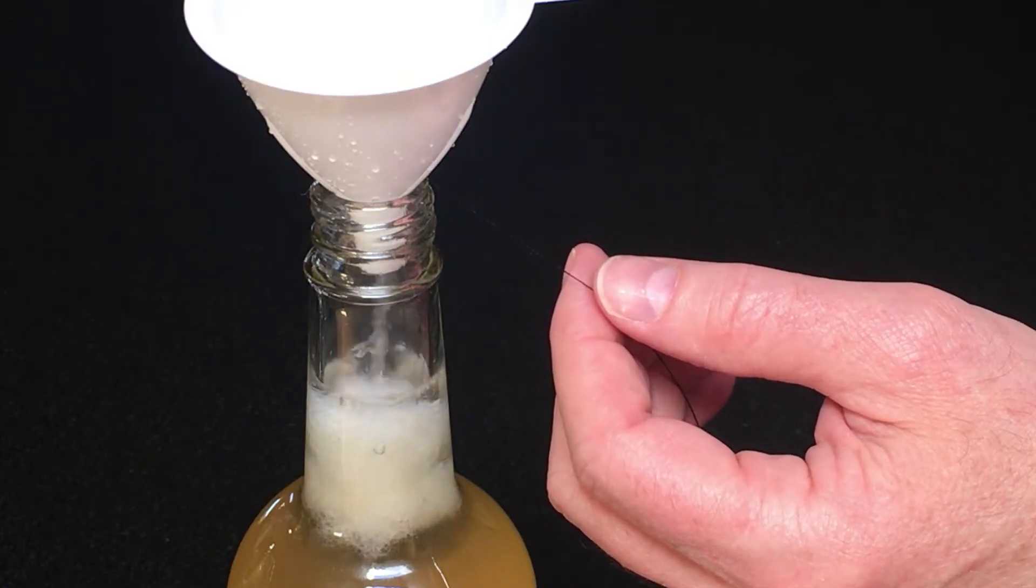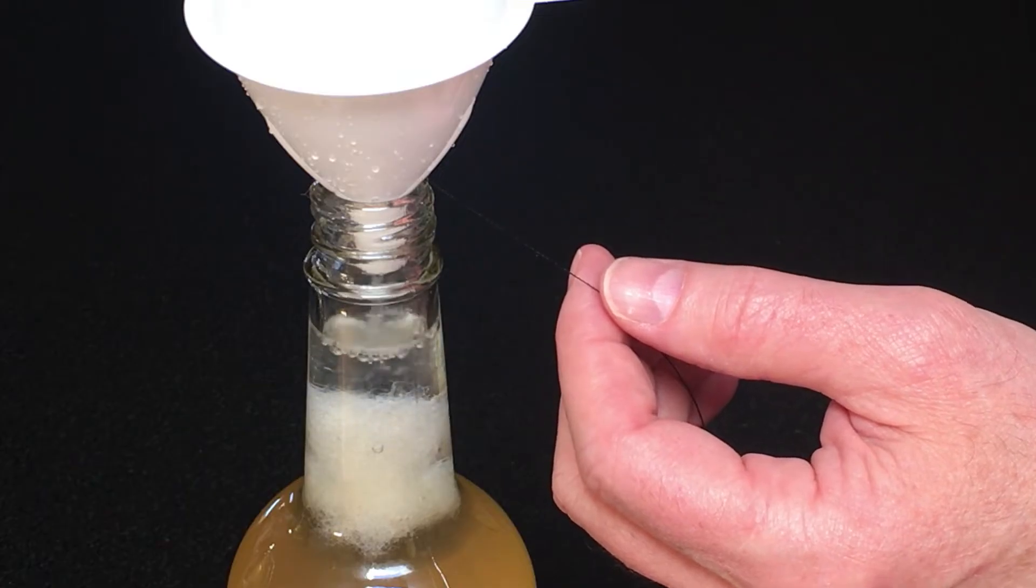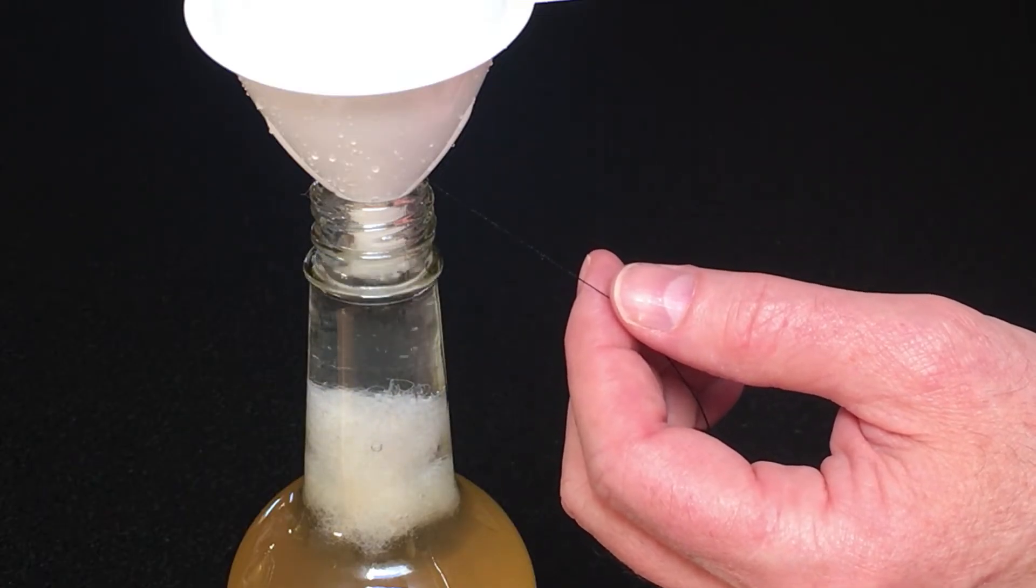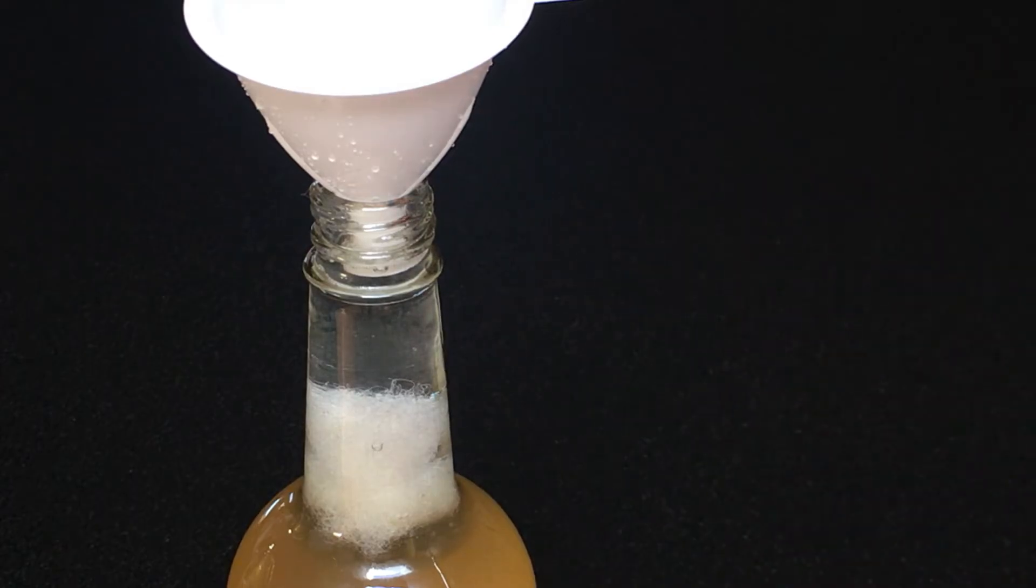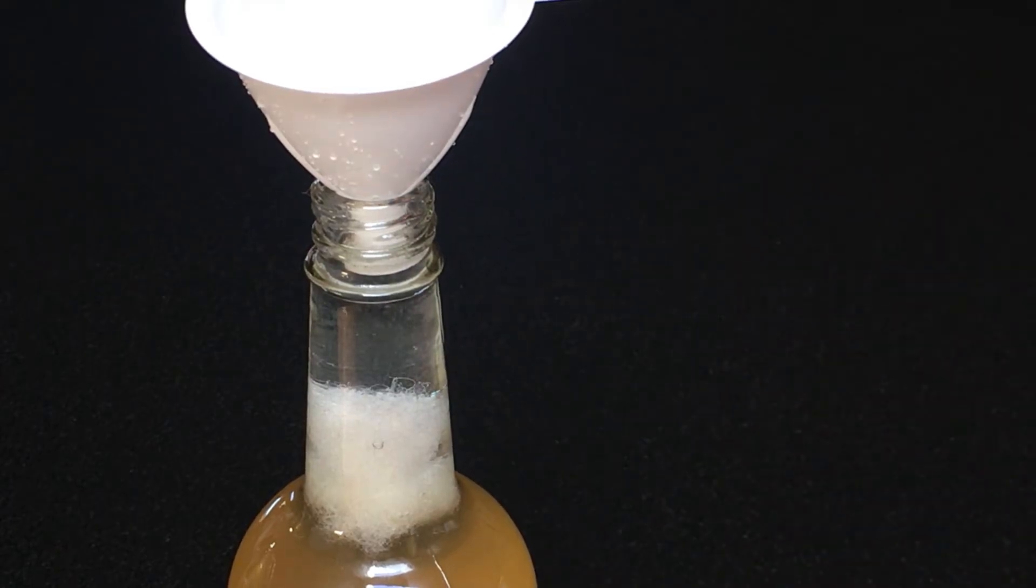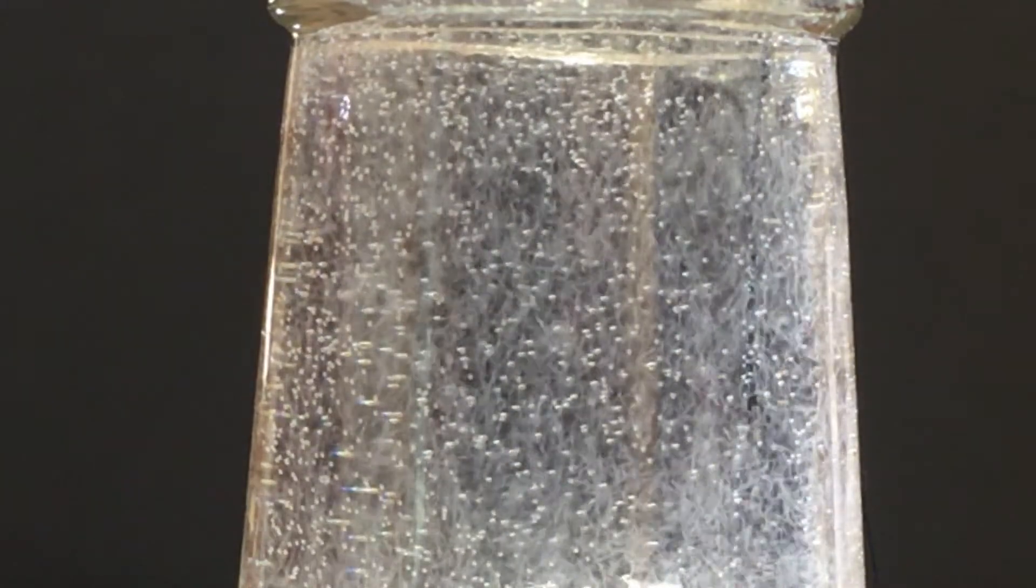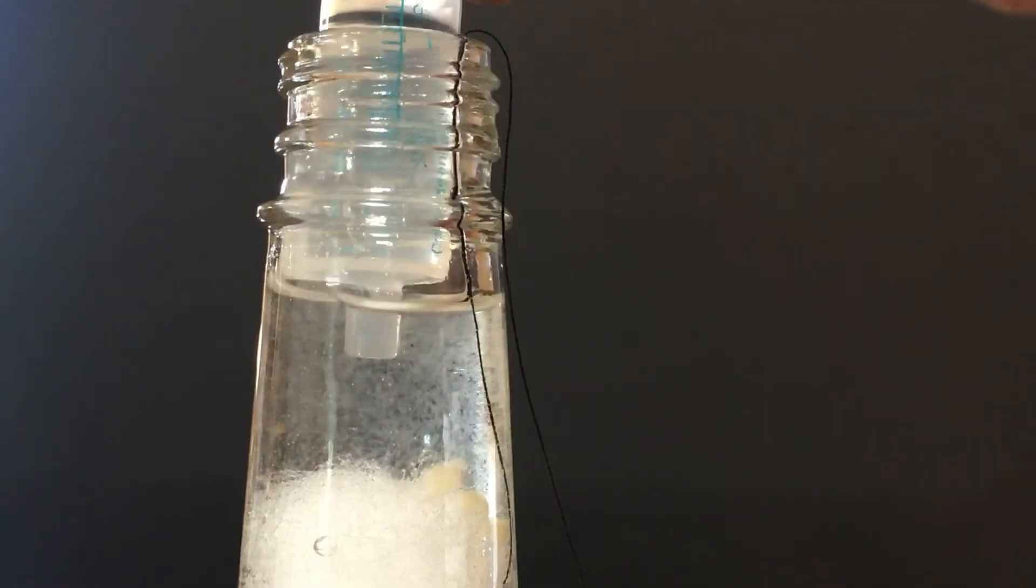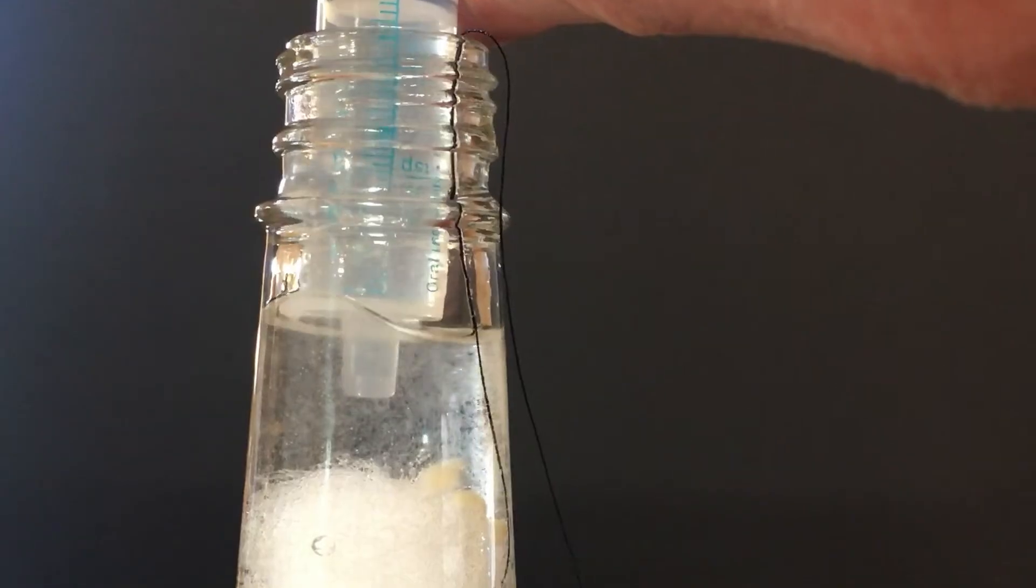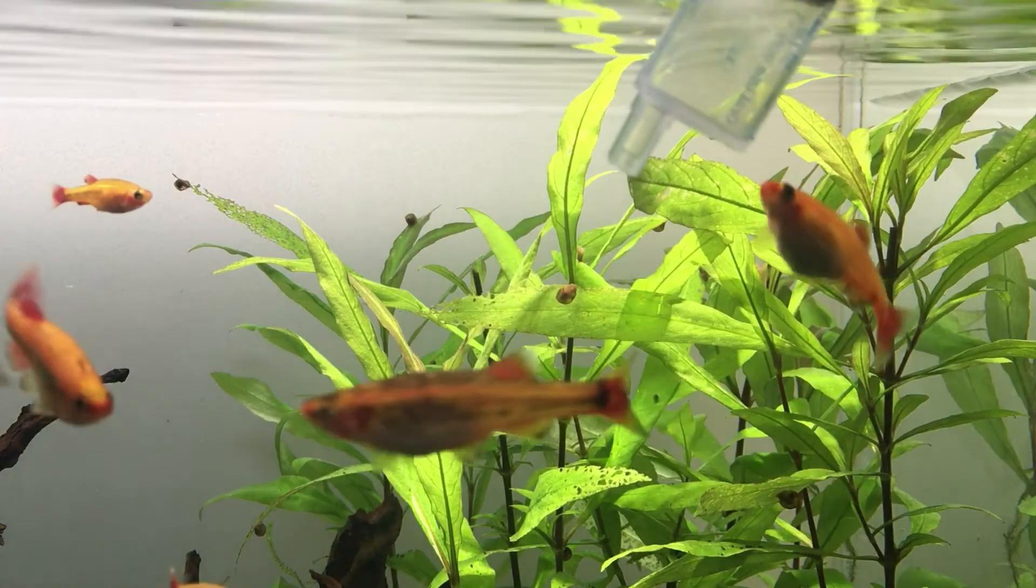Fill the neck above the floss with dechlorinated water. Hold the string so the floss doesn't fall down into the bottle. The water will stay above the vinegar solution. Wait 20 to 30 minutes. The eels will swim up through the floss in search of oxygen. Then you just need to suck up some eels with an eyedropper or syringe and feed them to your fish.